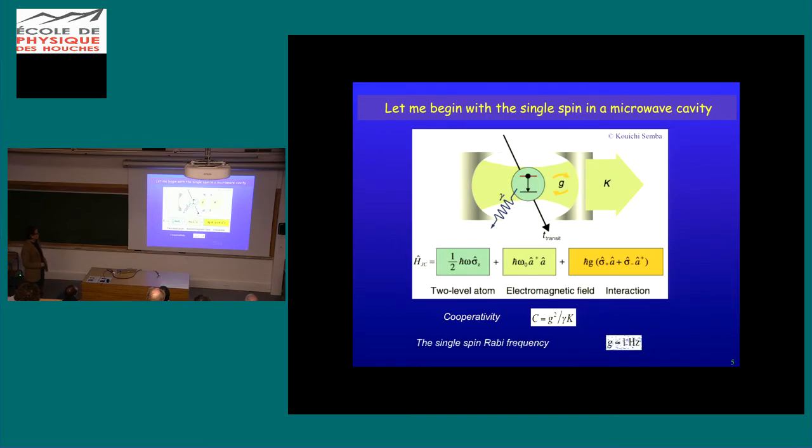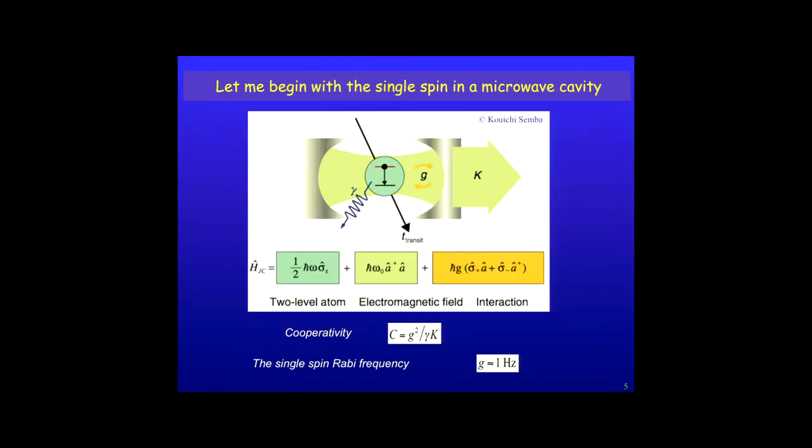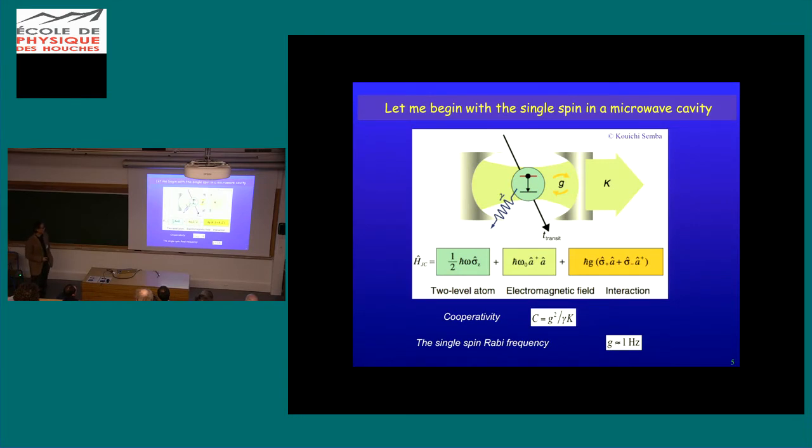Essentially, it's the Rabi frequency squared divided by the dissipation rate of your spin and the dissipation rate of your cavity. And I actually calculated that this Rabi frequency for a single spin is about at the rate of one hertz. But I never realized the meaning of that until I learned this week during the conference.